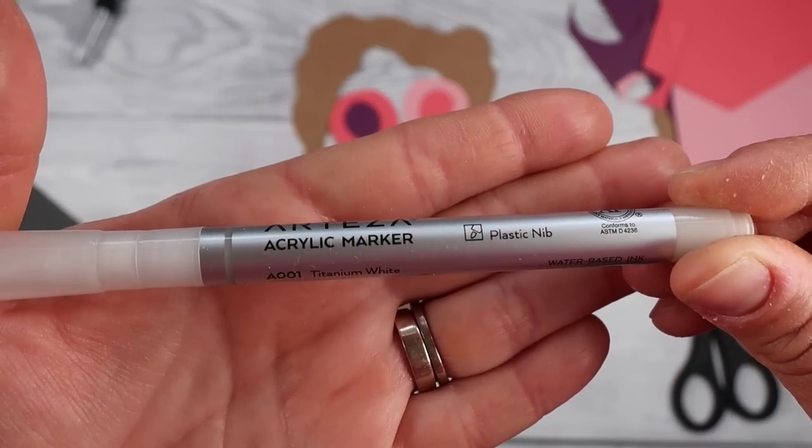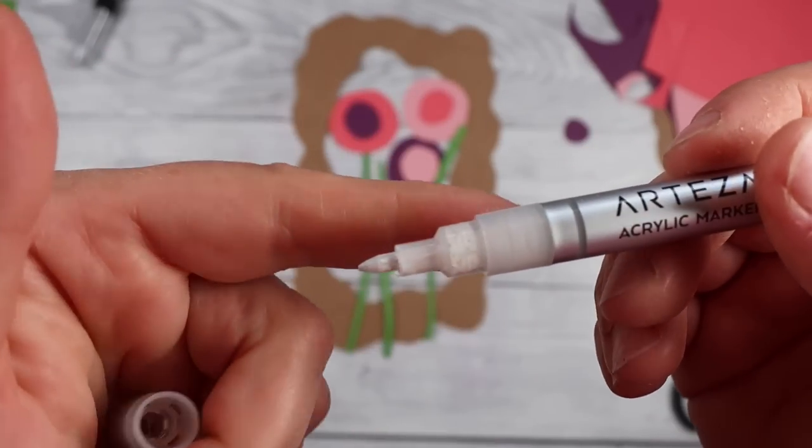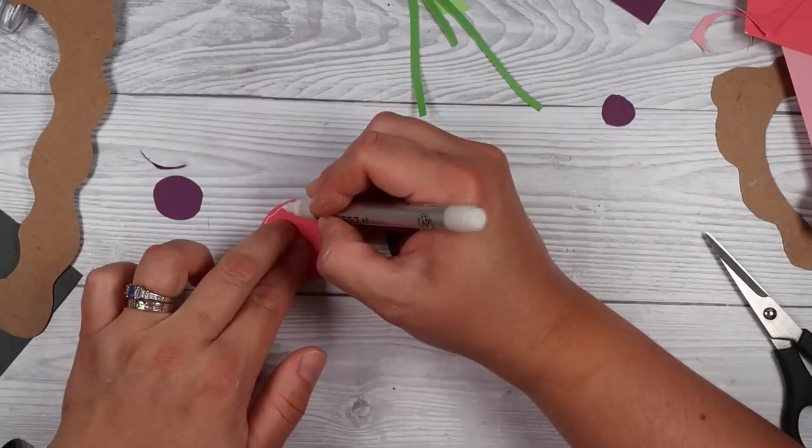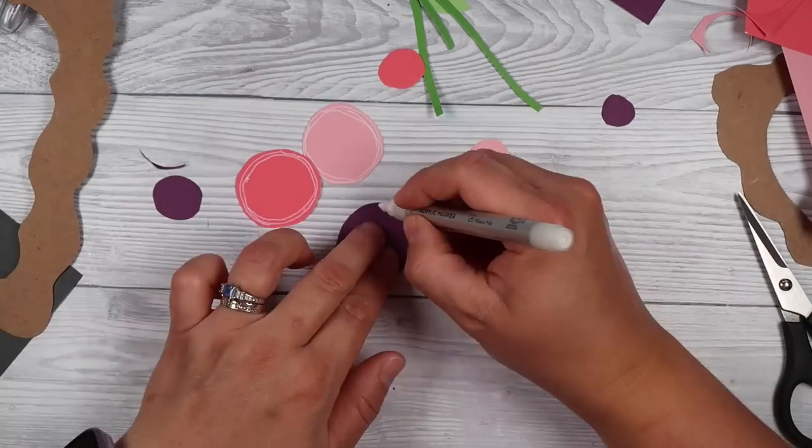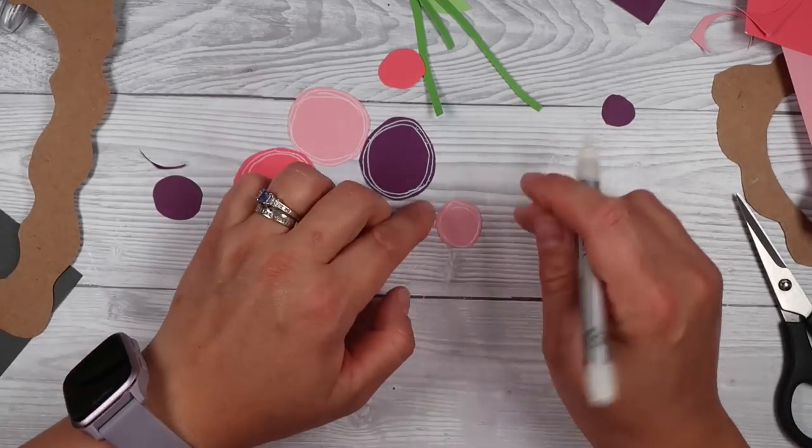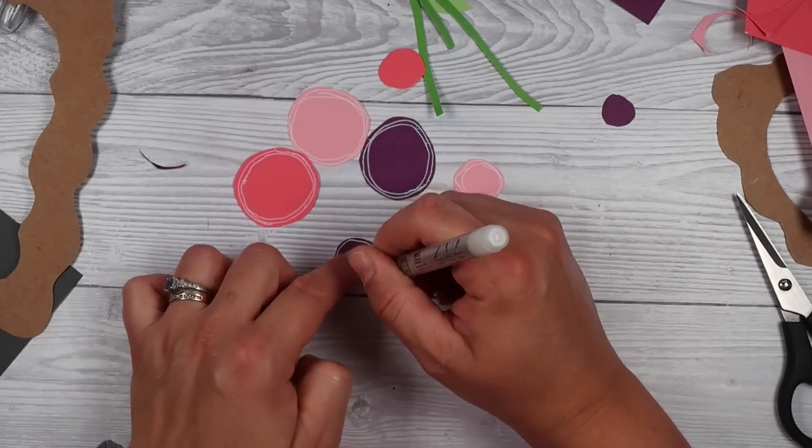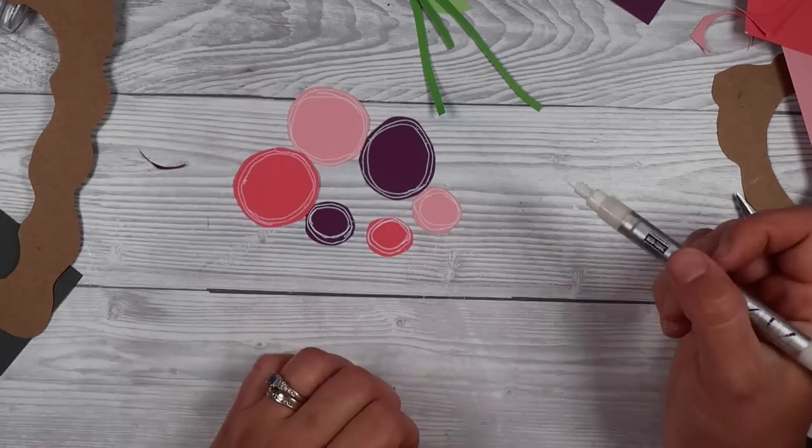It's just a nice laid-back crafting session which is great for being able to use up those scraps in your collection. If you're on holiday like me, this is a great way to do some crafting where you can take minimal supplies. Now I'm going to take my white acrylic pen and just draw some wonky lines around the outsides of my circles.